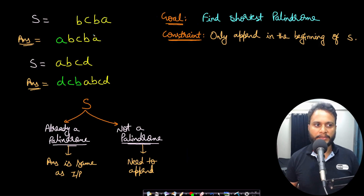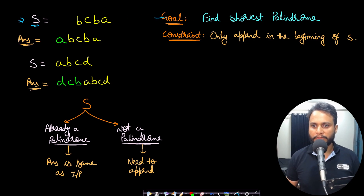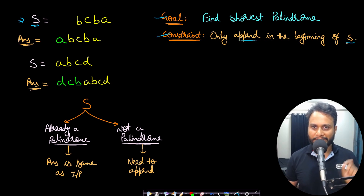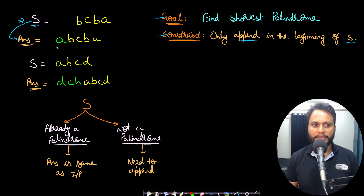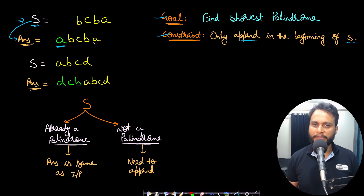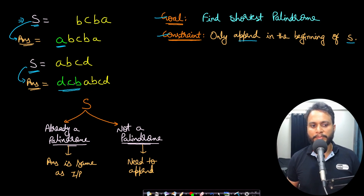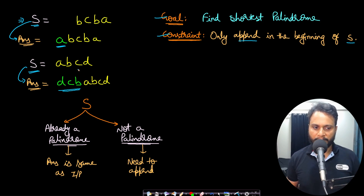Let's look at some examples. If the input string s is 'bcba', our goal is to find the shortest palindrome, and the constraint is that we can only append characters at the beginning of s. So I can append an 'a' at the beginning to form 'abcba', which is a palindrome. For the second example 'abcd', I can append 'bcb' at the beginning to make the entire string a palindrome.